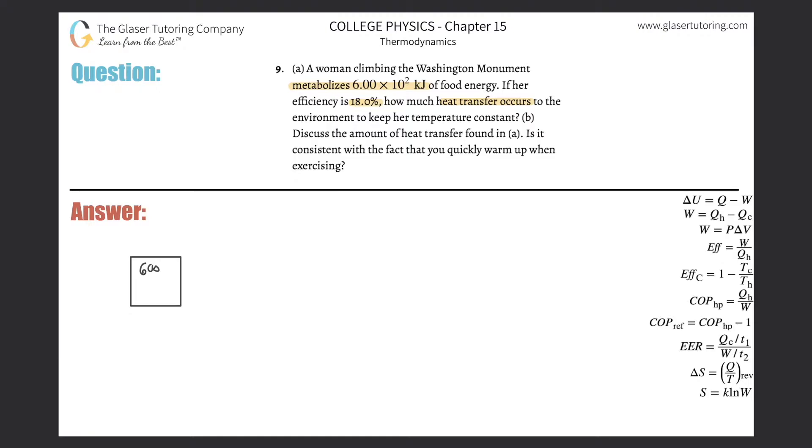We spoke at length that some of this energy being metabolized inside the body via your chemical processes—glycolysis, Krebs cycle, electron transport chain, beta oxidation—this energy that is being metabolized goes two places: useful work and heat loss to the environment.